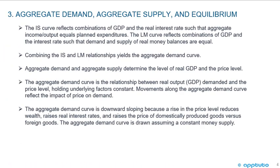To summarize some key points: the IS curve reflects combinations of GDP and the real interest rate such that aggregate income output equals planned expenditures. The LM curve reflects combinations of GDP and the interest rate such that demand and supply of real money balances are equal.